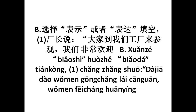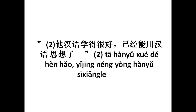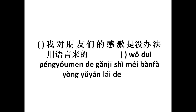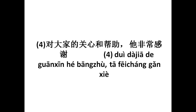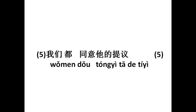Moving on to the fifth exercise. We have to fill in these blanks using either Pyao Shuv or Pyao Ta. Chang chang shuo, ta jia, dao, woumen, gong chang lai, sang guan, woumen — blank — fee chang hua ding. Tha han yu shui de han hao, yijing, nang yong han yu — blank — sishang la. Woh, doi, pong yu man de, kan chi, shere, may ban fa, yong yu yan, lai, dash, and it ends with the. Doi ta chi aada, kwan chi ha, pang chu, tha, fee chang kaanshiye — towards everybody's concern and help he expressed gratefulness. Pong yu, thong yu, tha da, thii yi — thii yi is proposal — so all of us without exception thong yu, agreed to his proposal.